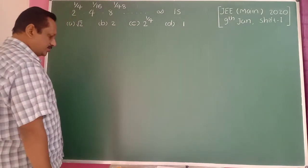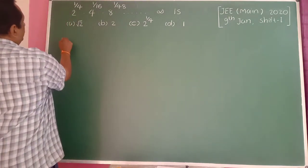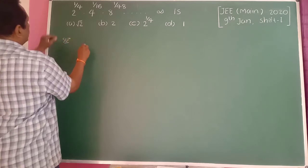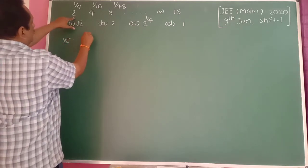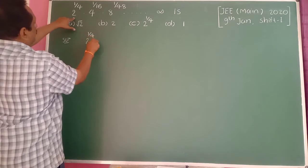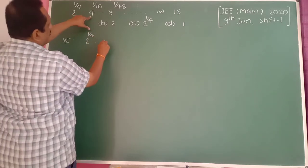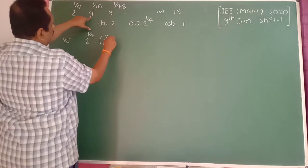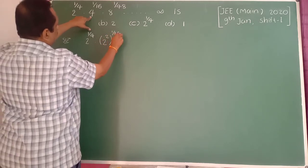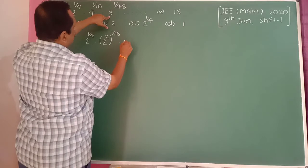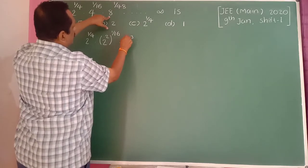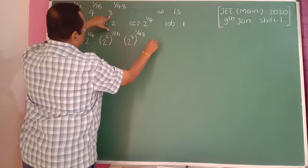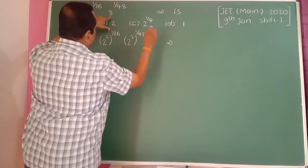A simple solution: 2 raised to 1/4, and 4 can be written as 2 squared raised to 1/16, and 8 is 2 cubed raised to 1/48, and so on up to infinity.